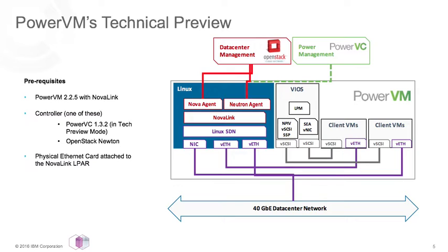In PowerVM 2.2.5 and PowerVC 1.3.2, administrators can build a technical preview SDN environment. Having a technical preview allows us to get feedback from users as we finalize the development of this work, and it enables us to get this technology out early for users to experiment with. The prerequisites are: a PowerVM 2.2.5 system running NovaLink, a physical Ethernet card attached to that NovaLink LPAR for data network communication, and either PowerVC 1.3.2 or OpenStack Newton to control the system.